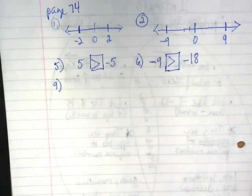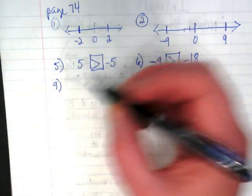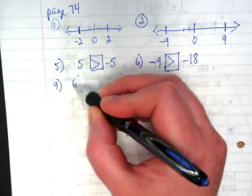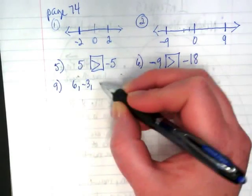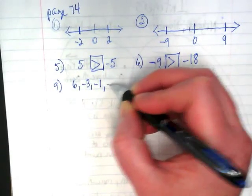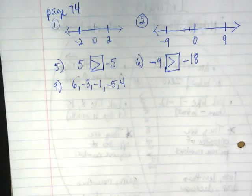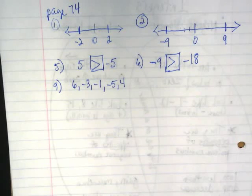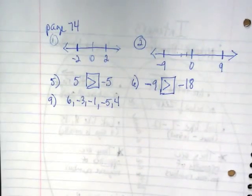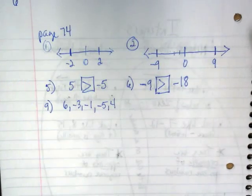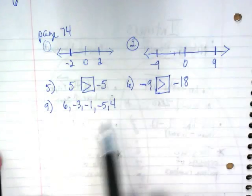Now we're going to skip down to number nine. First thing I want you to do when you see problems like this is write all the numbers just as they are in the book. It says six, negative three, negative one, negative five, and four. The directions say use a number line to order the integers from least to greatest. Does it say you have to draw a number line? It just says use a number line, and you guys have a number line right there on the top of your notebook. You can just look at it to help you make sure you're putting them in order.